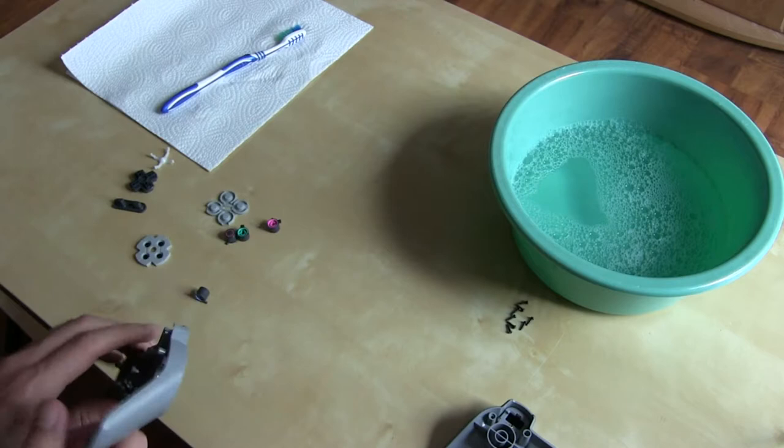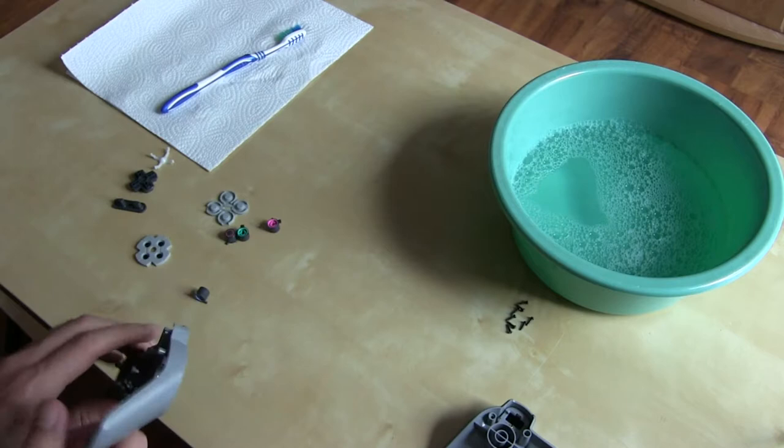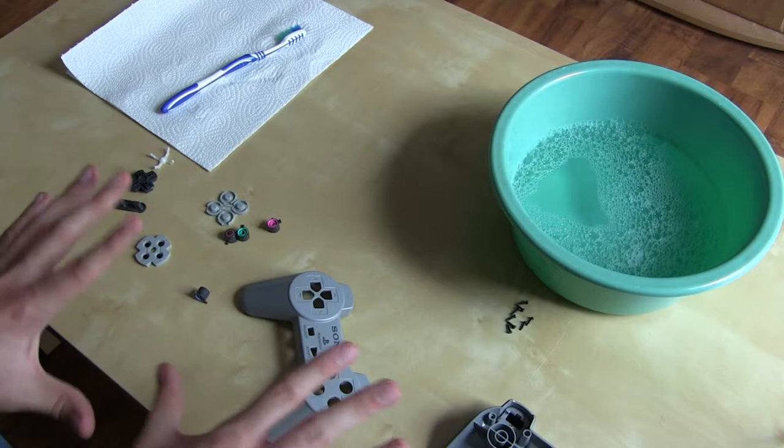Okay, now the entire thing is taken apart and these are the parts we can actually clean. We can kind of clean the board later on, but these are the things we can clean with this bowl of soap water. Okay, let's start.